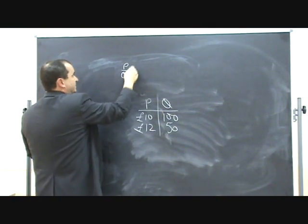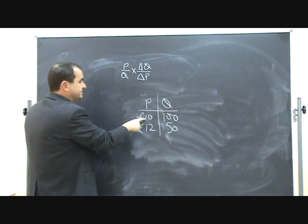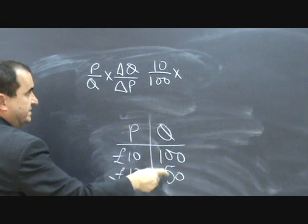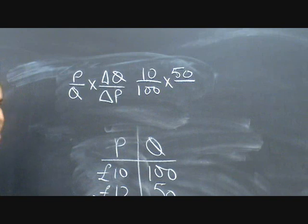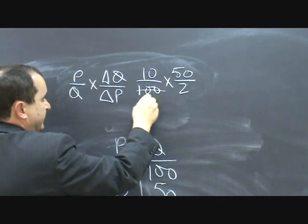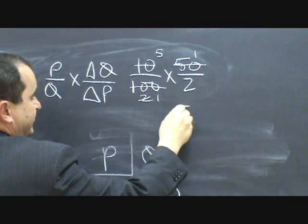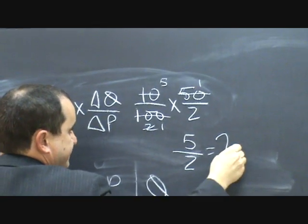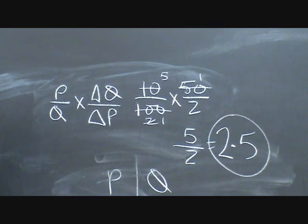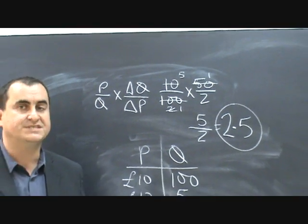The equation is P/Q × ΔQ/ΔP. Putting the figures in: P over Q is 10 over 100, times change in quantity over change in price. The change in quantity is 50 — it fell by 50 (ignoring the minus) — and the change in price is 2. So we've got 10/100 × 50/2. Simplifying, we get 5/1 × 1/2, giving us a value of 2.5. That's very elastic demand. It implies that when the price changed, quantity demanded reacted in a more responsive way. To be precise, 2.5 means that for every 1% change in price, there was a 2.5% fall in quantity demanded.